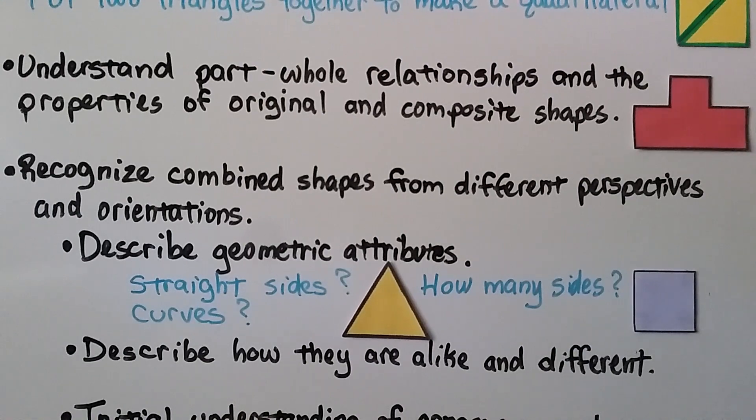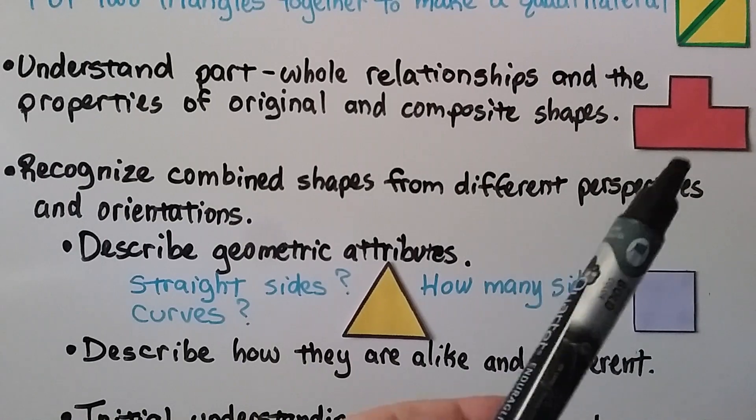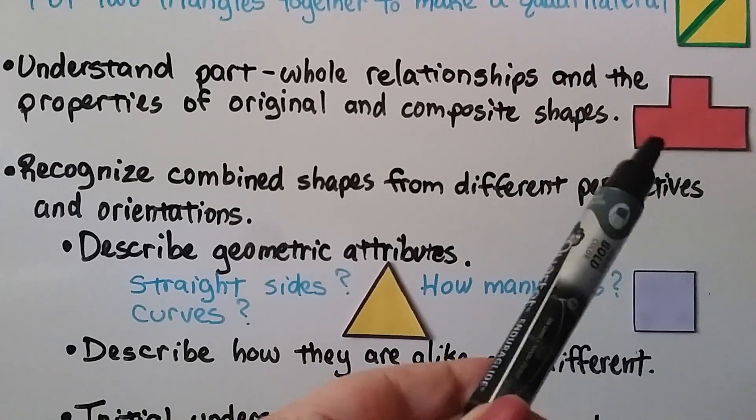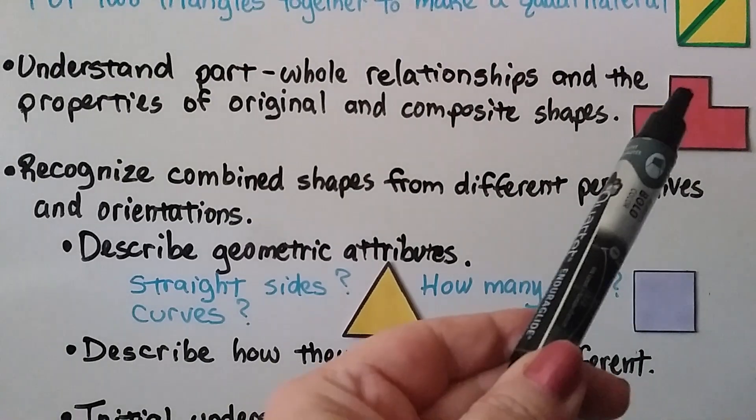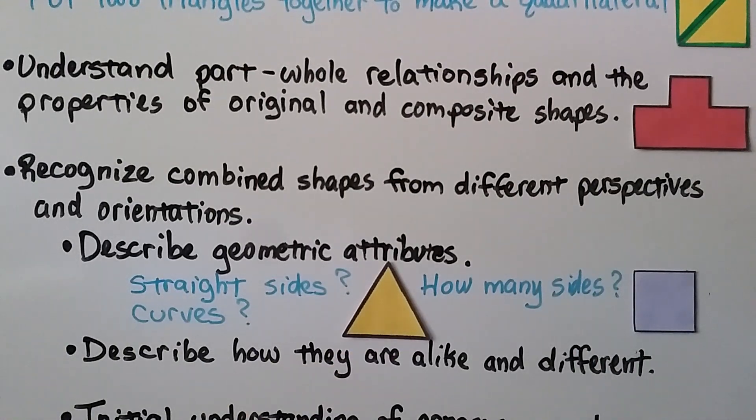They need to understand part-whole relationships and the properties of original and composite shapes. Composite shapes are shapes that we put together to make another shape. So this is a rectangle and a square. And recognize combined shapes from different perspectives and orientations. And describe geometric attributes.